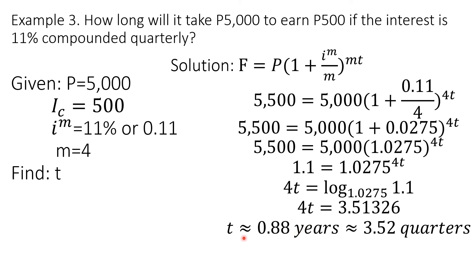By dividing both sides by 4, we will be able to solve for the value of T, which is 0.88 years, which is equivalent to 3.52 quarters. That can be solved by multiplying it by 4, because there are 4 quarters in a year. Because the interest is earned only at the end of the period, 4 quarters or 1 year is needed so that the interest can reach 500 pesos. So T is equal to 1 year.